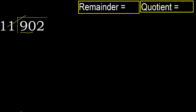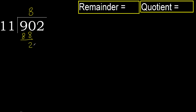11 multiplied by which number is nearest to 90 but not greater? 11 multiplied by 9 is 99, which is greater. Multiplied by 8 is 88, which is not greater. Subtract 90 minus 88 equals 2.